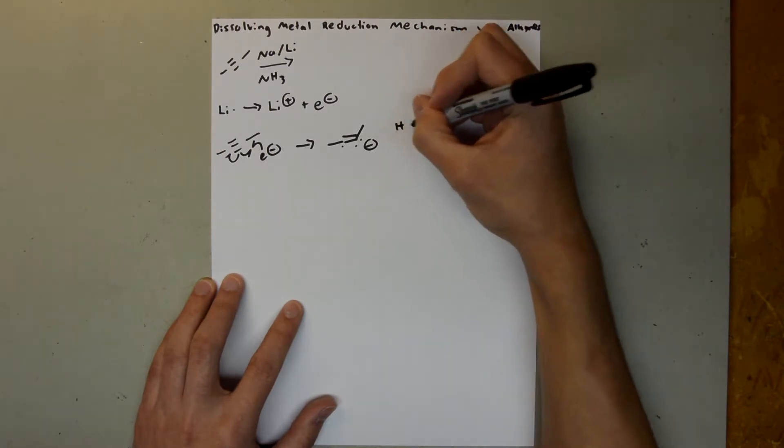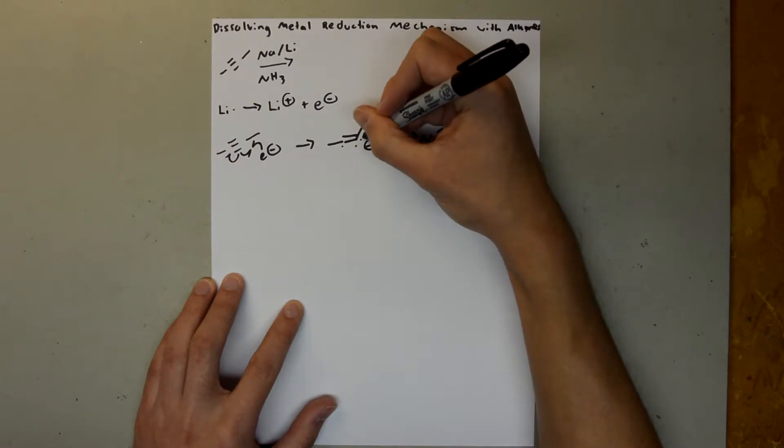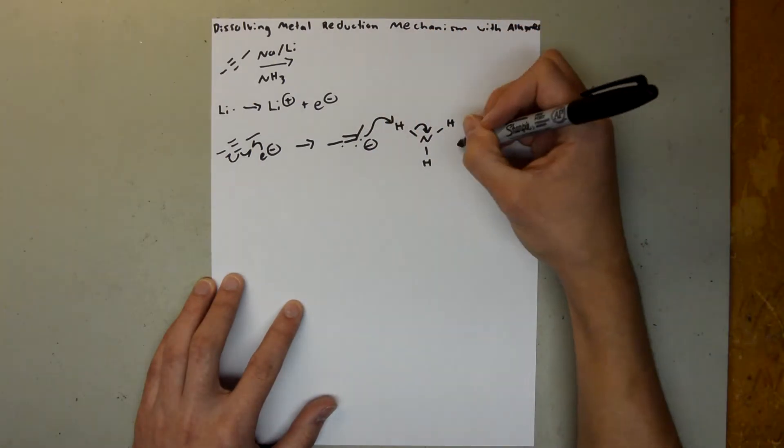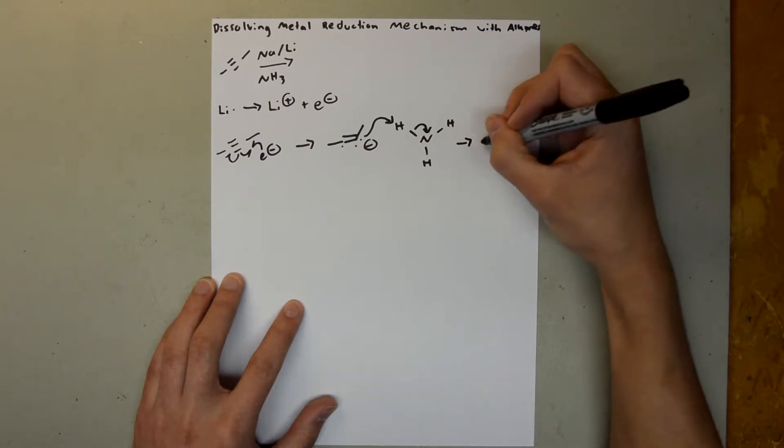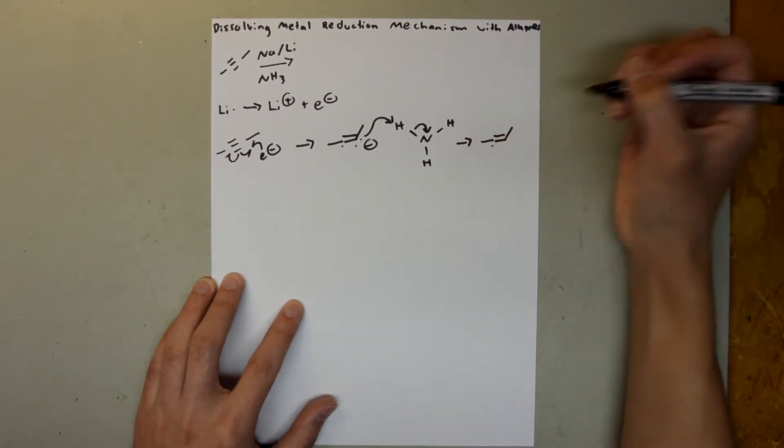And then that's going to react with our NH3. This lone pair is going to attack the hydrogen, and this bond is going to go to the nitrogen. And that's going to form this with an electron here still.